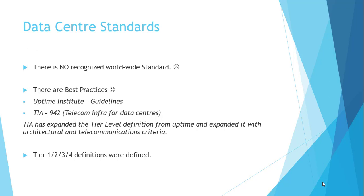TIA-942 came up with different definitions for data centers. They started calling them Tier 1, 2, 3, and 4. These tier definitions were defined by ANSI. Let us see Tier 1, 2, 3, and 4 in detail.